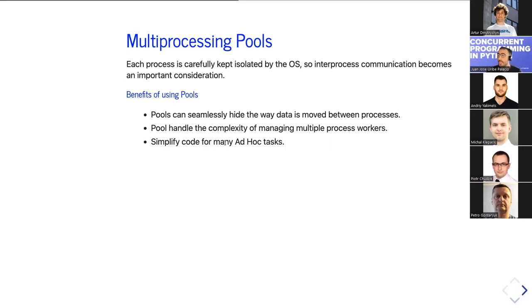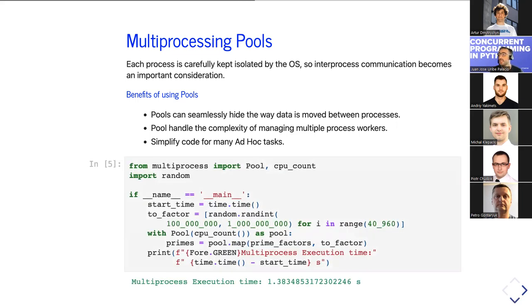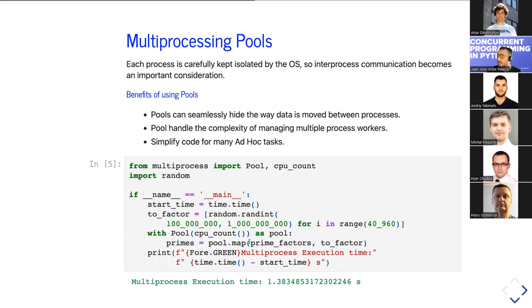With pools, you can handle complexity because it's simple to write multi-processing in a single piece of code. It's especially designed for cases where you have many similar ad-hoc tasks that can be mapped to an iterator. Here's a code example: we're calculating prime factors for 41,000 numbers between 100 million and 1 billion. The pool is defined with a context manager, and we pass cpu_count() as the number of workers.